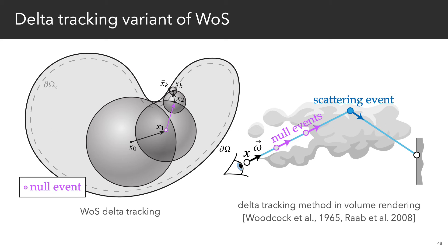So for instance, the delta tracking version, shown here on the left, uses the concept of null events from volume rendering to sample points either inside or on the boundary of a ball.